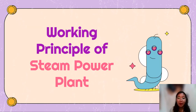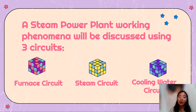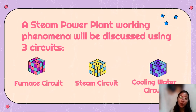In the next slides, we will discuss about the working principle of the steam power plant. The steam power plant working phenomena will be discussed using these three circuits: the furnace circuit, the steam circuit, and the cooling water circuit.